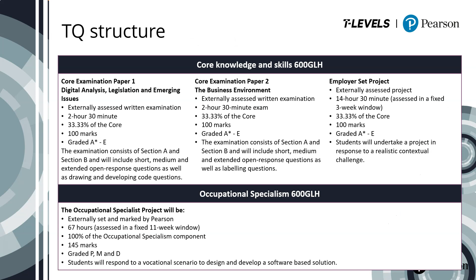This slide contains an overview of the technical qualification, or TQ for short. The TQ is split into two components: the core and the occupational specialism. The core is 600 guided learning hours and has three assessments. There is a Getting to Know the Specification recording specifically for the core component, available to watch on demand via our website.